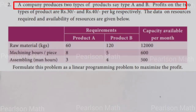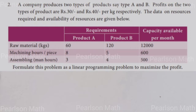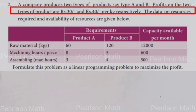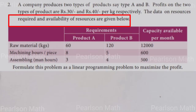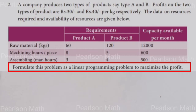Second problem: A company produces two types of products, type A and type B. Profits on the two types of products are rupees 30 and rupees 40 per kg respectively. The data on the resources required and the availability of resources are given below.